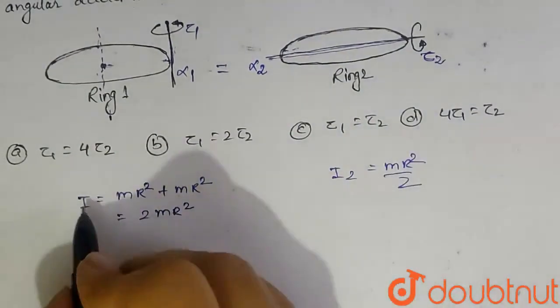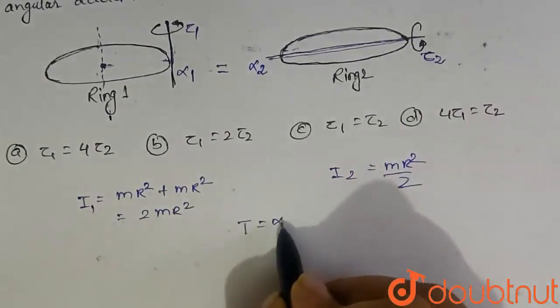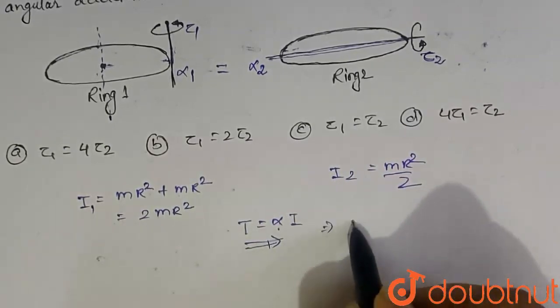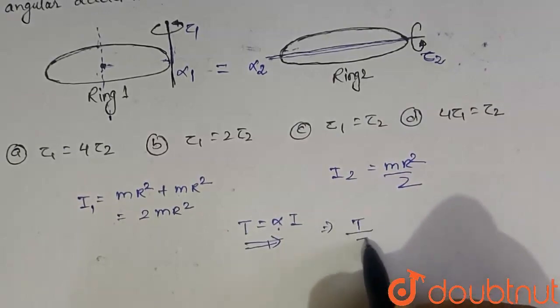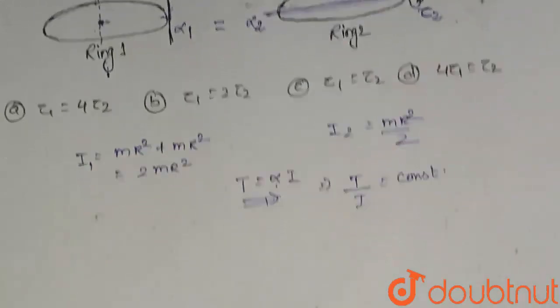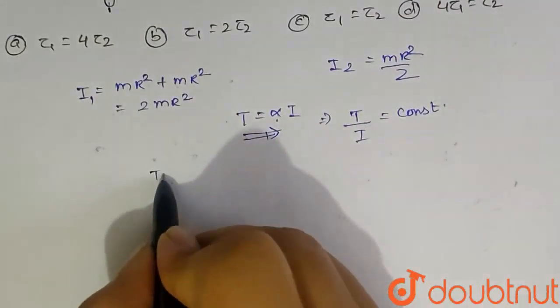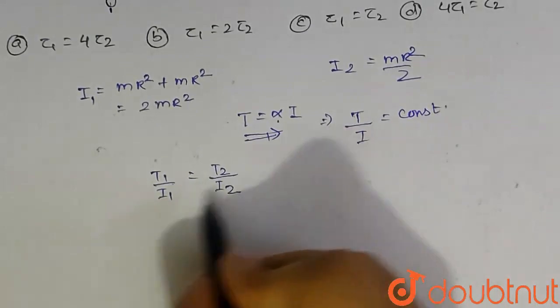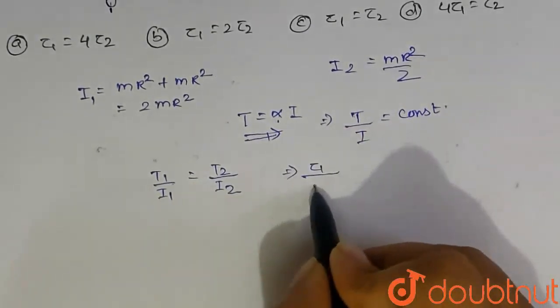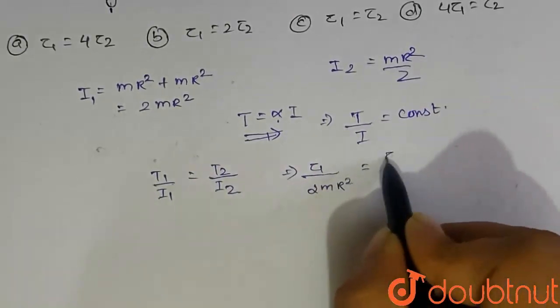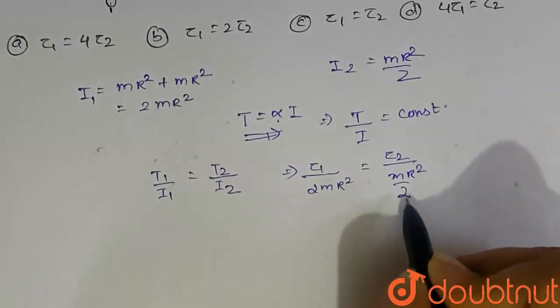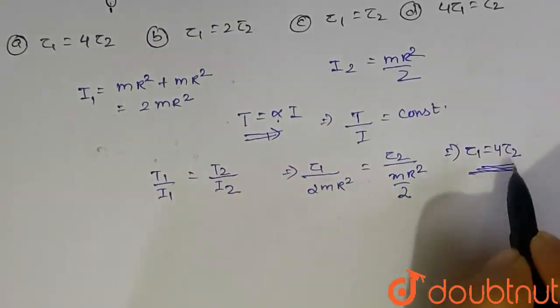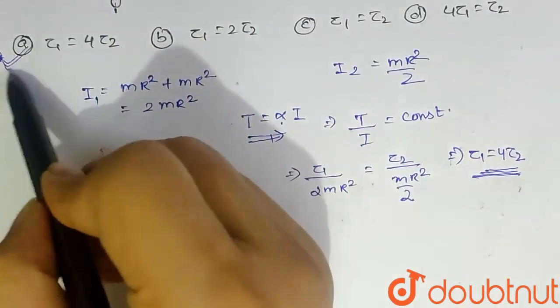Since torque equals I alpha, and alpha is constant in both cases, we can say torque by I equals constant. So tau1 by I1 equals tau2 by I2. Tau1 divided by 2mr squared equals tau2 divided by mr squared by 2. Solving this equation, tau1 equals four times tau2. So option A is the correct answer.